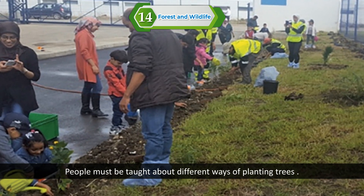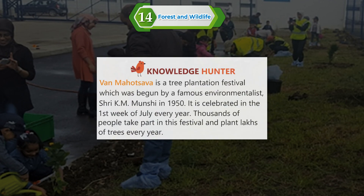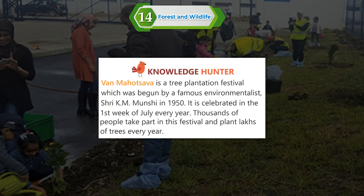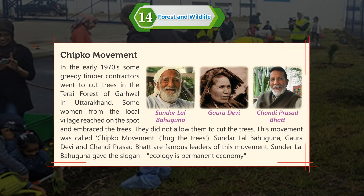People must be taught about different ways of planting trees. Knowledge hunter: Van Mahotsav is a tree plantation festival which was begun by the famous environmentalist Shri K.M. Munshi in 1950. It is celebrated in the first week of July every year. Thousands of people take part in this festival and plant lakhs of trees every year.